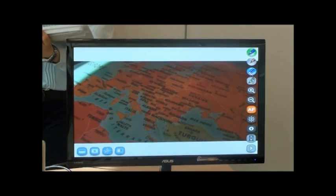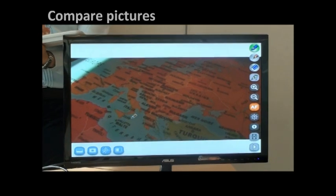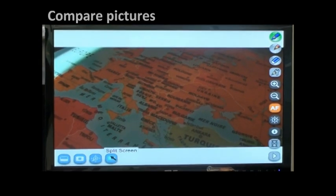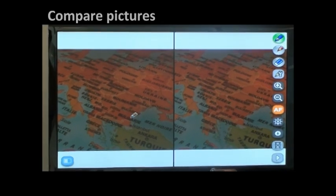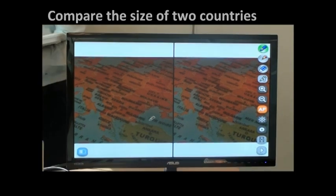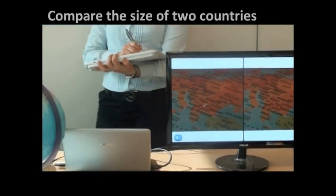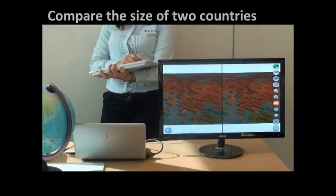Also another option is probably can split the screen into two to compare two images. And this by clicking in here. Like this. Split screen. And here we can compare probably the size of a country and another. Like Greece for example. Here. So Greece. This is Greece.